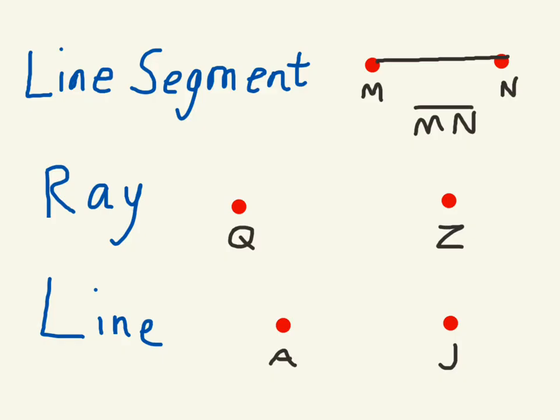A ray starts at one point and continues through the other point. So I'm going to start this one on Z, goes through Q, and put the arrow there. Now this one would be ZQ, ray ZQ.